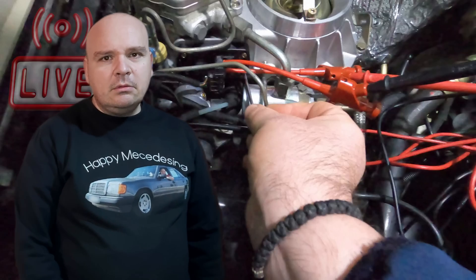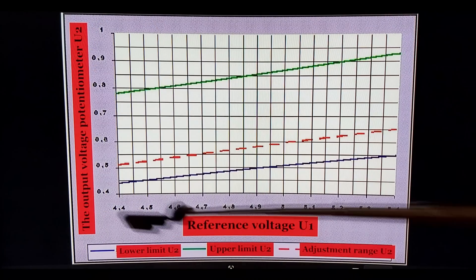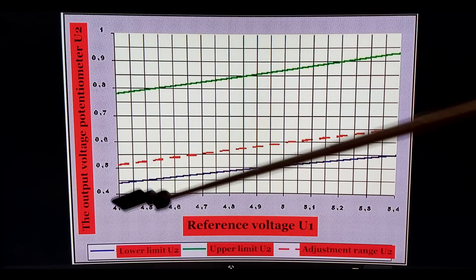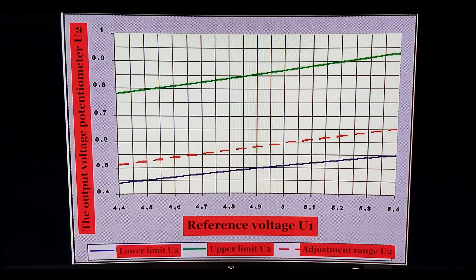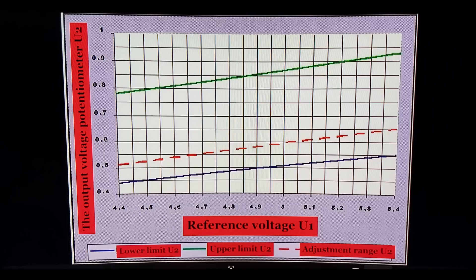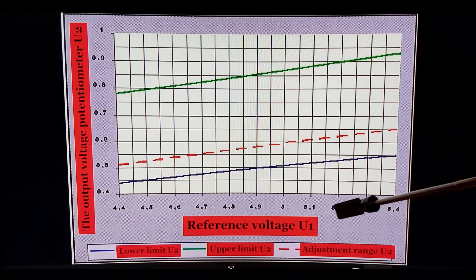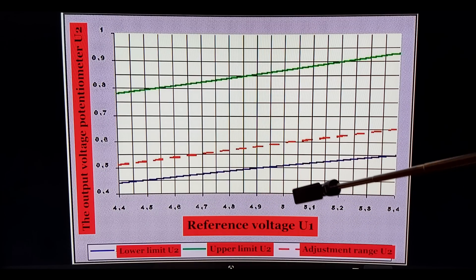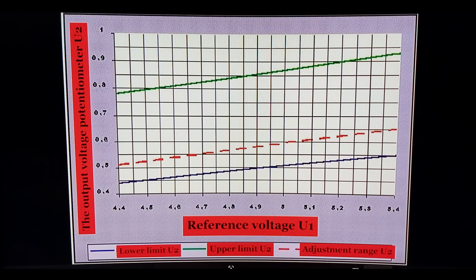You can see here these two voltages. This one is called U1, the reference voltage, and it's referred to the voltage on pin number three on your potentiometer.